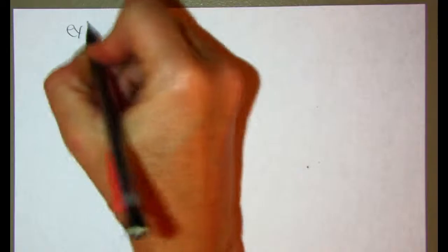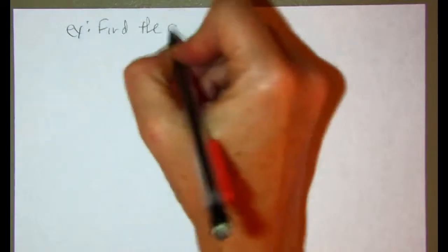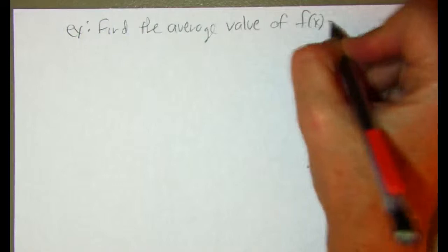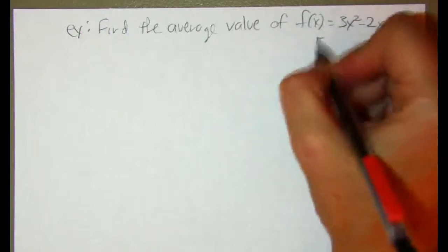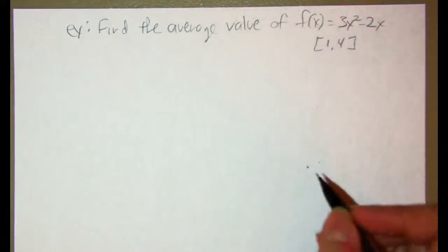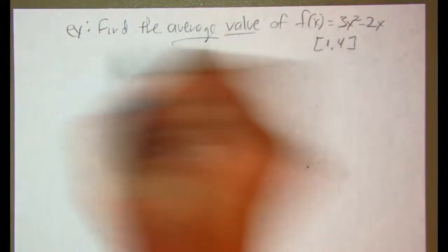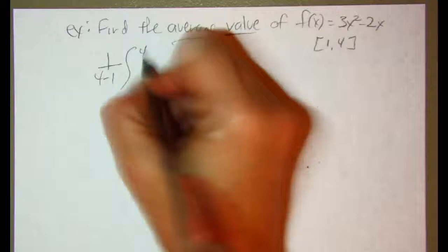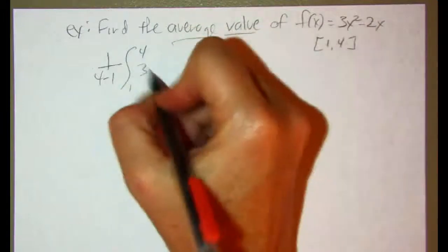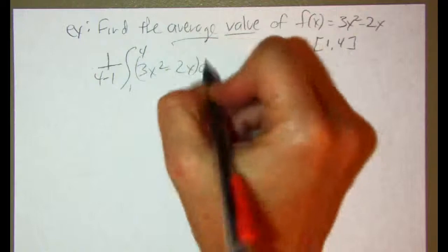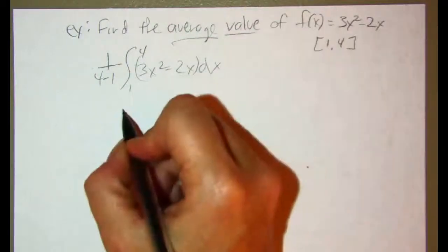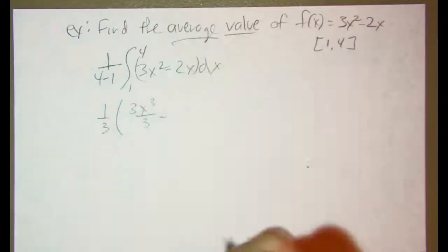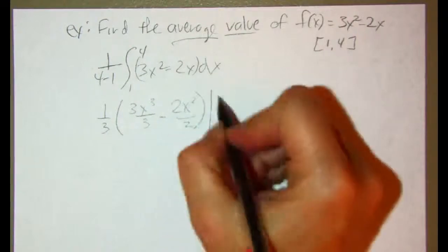So let's do an example. Let's find the average value, which means we're going to integrate, of f of x equals 3x squared minus 2x on the closed interval from 1 to 4. So to find the average value, what I'm going to do is 1 over b minus a. That's 4 minus 1, and that's going to be out front of the integrand. We're going to be going from 4 to 1, and the function is 3x squared minus 2x times dx. And I'm going to go ahead and just integrate. So this is 1 over 3, and this would be 3x to the third over 3 minus 2x squared over 2 from 1 to 4.